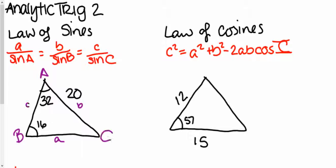It doesn't matter where they go, so long as big C and little c are across from each other, big A and little a are across from each other. So I have A and B here, so what I can do is say that A over sine of big A, or of 32, is equal to little b, or 20, over sine of 16.